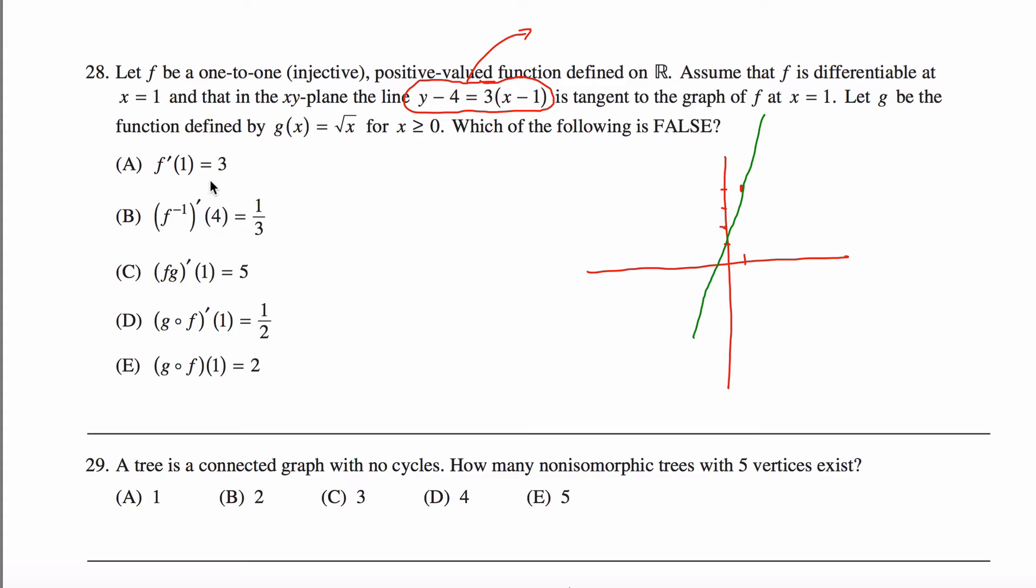This first statement here, F prime of one equals three. Well, that's certainly true, right? Because that's exactly what I just drew here. This is saying that the slope of the tangent line to my function F at the point one is equal to three. Yup, that comes from this three right here. This is certainly a true statement.